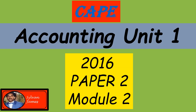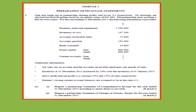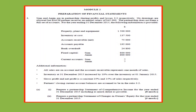Today we will be looking at Accounting Unit 1, 2016, Paper 2, Module 2. Part A: prepare a partnership statement of comprehensive income for the year ended 31st December 2015, including as much detail as possible. Second: prepare a partnership statement of changes in owner's equity for the year ended 31st December 2015.